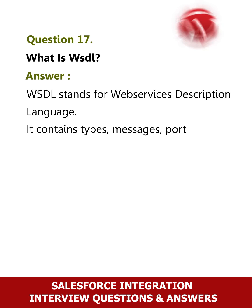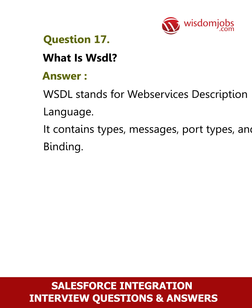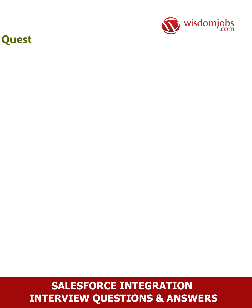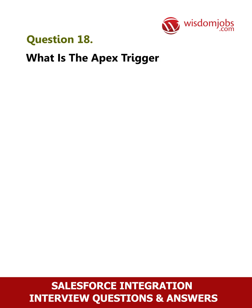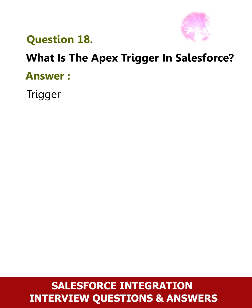Question 17: What is WSDL? Answer: WSDL stands for Web Services Description Language. It contains types, messages, port types, and binding. Question 18: What is an Apex trigger in Salesforce? Answer: A trigger is an Apex code that executes before or after the following types of DML operations: